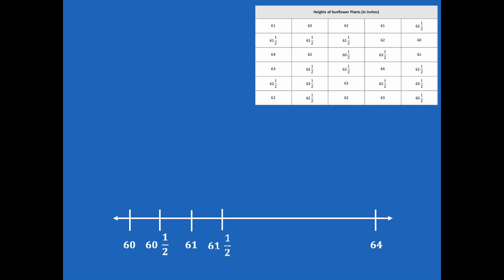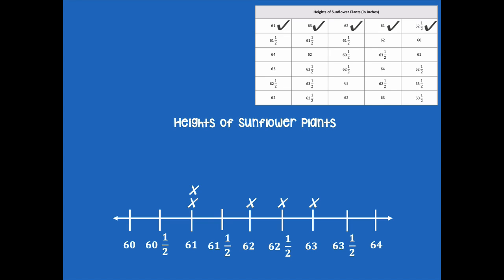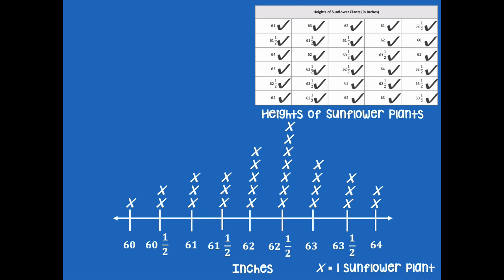We go by half inches in between: 60, 60 and a half, 61, 61 and a half, 62, 62 and a half, 63, 63 and a half, and 64. I'm going to plot my data — 61 has one, check it off; 63, check it off; 62, check it off; 61, check it off; 62 and a half, check it off. Through the magic of teacher magic, I'll label the title, the measurement, and what the X represents, and now complete the line plot.